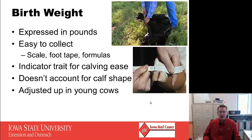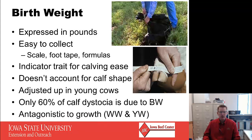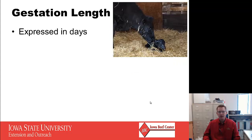Birth weight is adjusted upward in young cows — two-year-olds get a significant adjustment, three-year-olds a slightly smaller adjustment, and mature cows are not adjusted at all. Only 60% of calf dystocia is due to birth weight; the other 40% involves factors like malpresentations. It's also important to understand that birth weight is antagonistic to other growth traits like weaning weight and yearling weight — bigger calves at birth tend to be bigger at weaning and yearling.